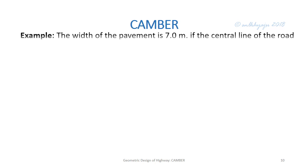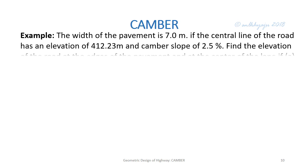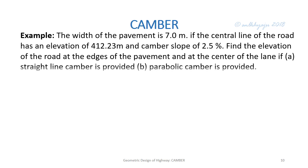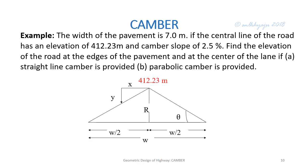Example: The width of the pavement is 7 meters. The center line of the road has an elevation of 112.23 meters and the camber slope is 2.5 percent. Find the elevation of the road at the edge of the pavement and at the center of the lane, if (a) straight line camber is provided, or (b) parabolic camber is provided. For straight line camber, the center of the road (crown) has elevation 112.23 m and w = 7 m.